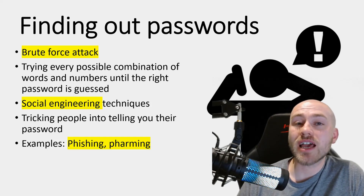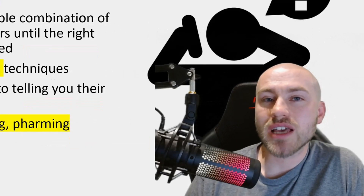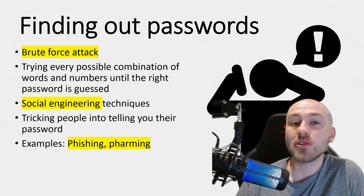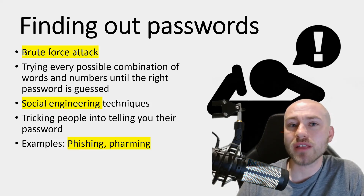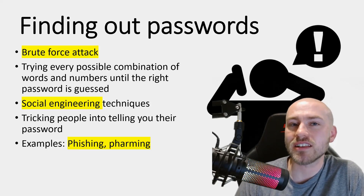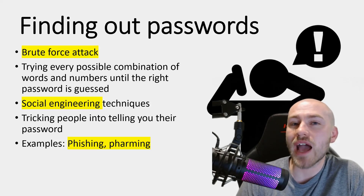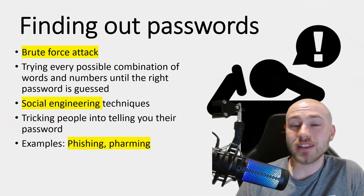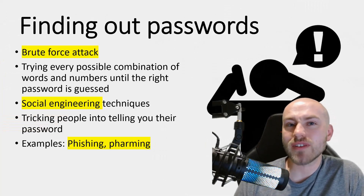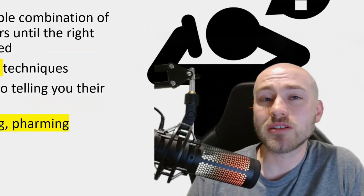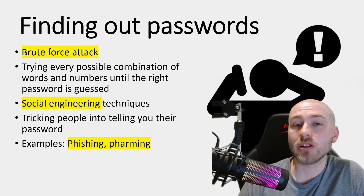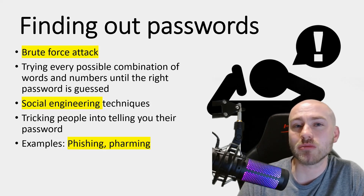Other social engineering methods include pretext phone calls, sometimes referred to as blagging. This is where you trick someone over the phone into divulging confidential information by making up a believable scenario — like saying they've been in an accident or are owed PPI. Another method is shoulder surfing: quite literally looking over somebody's shoulder to find out their password, whether at a computer, cash machine, checkout, or a locked room like a staff room.